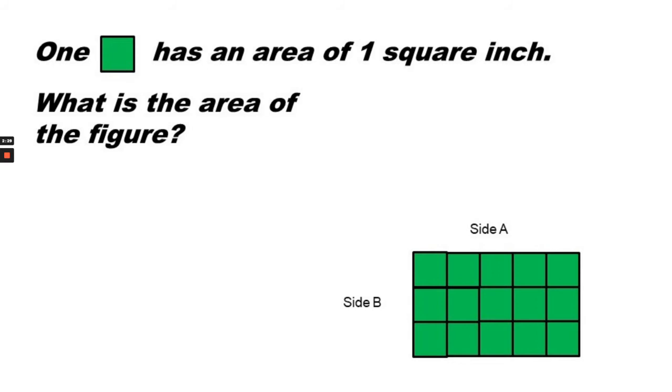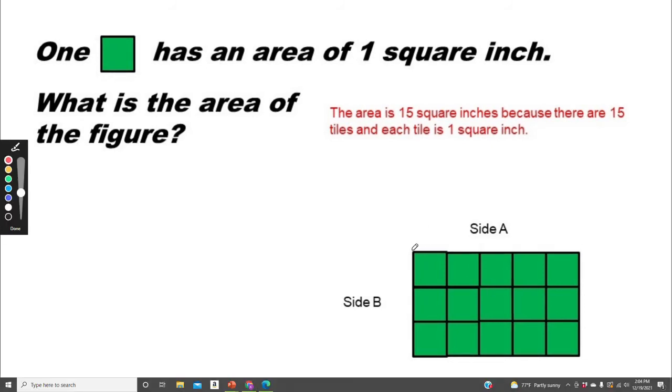So what is the area of the figure? There are a couple of ways that we can find the answer to this question. The area is 15 square inches because there are 15 tiles in all, and I can find that answer by multiplying side A times side B. Remember that side A is five and side B is three, and I know that five times three equals 15.